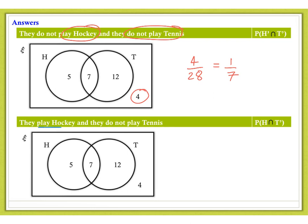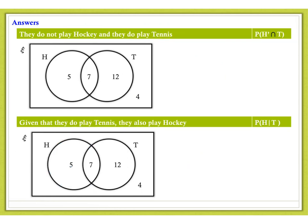They play hockey and, remember, that's strict. They do not play tennis. So, they must play hockey, but they cannot play tennis. So, it refers to this region here. The probability is 5 out of 28. They do not play hockey and they do play tennis. So, again, it's strict. It's an and condition. So, we want to look for everybody who does not play hockey, but they do play tennis. That's simply 12 people out of the 28, which, of course, simplifies down to 3 sevenths.